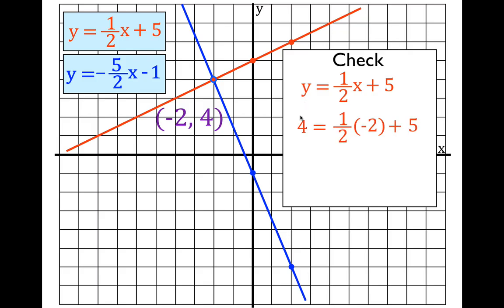So I have four equals one-half times minus two plus five. I multiply one-half times minus two, which gives me four equals minus one plus five, and you can see that four equals four. Because I get four equals four, I know that this point is a solution to this line — at least this point lies on the orange line.